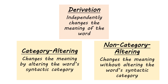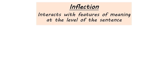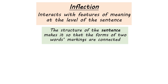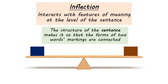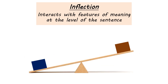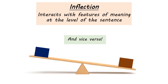There are two types of derivational morphology: category-altering and non-category-altering. Now let's move on to inflection, the trickier one. Inflectional morphology interacts with features of meaning at the level of the sentence. What happens with inflectional morphology is that the structure of a sentence connects the morphological markings of two words — like they're on a seesaw together. When you alter the marking of one of those words, it immediately alters how the other word has to be marked, and vice versa.